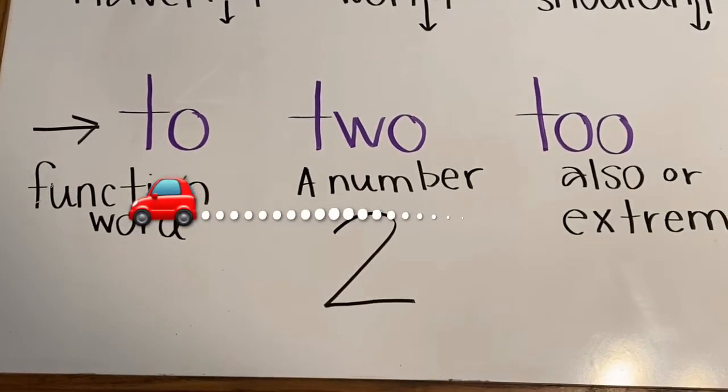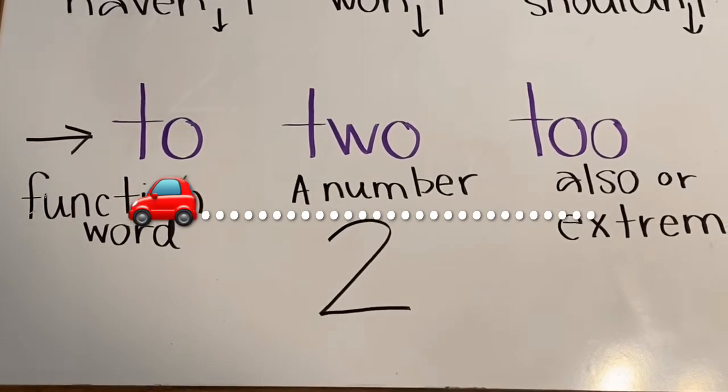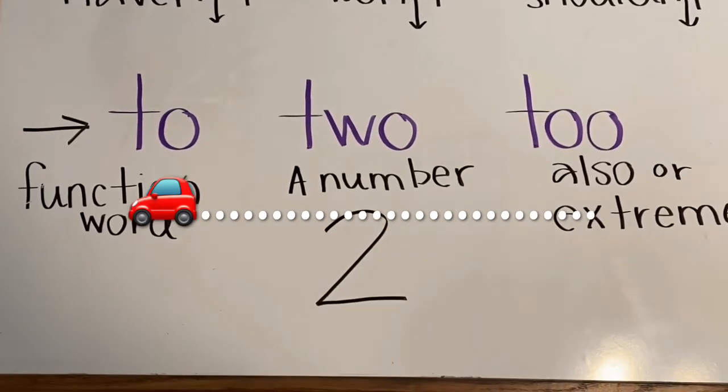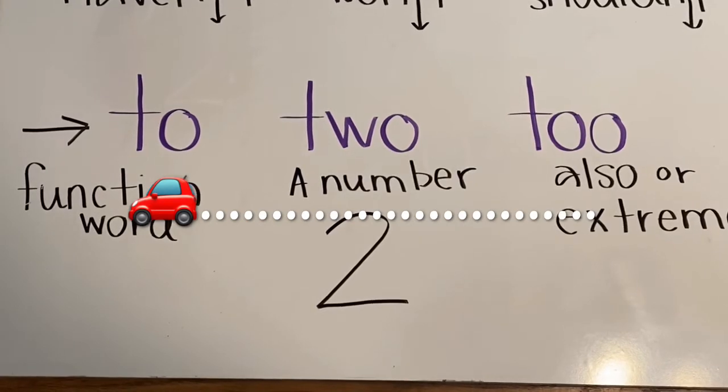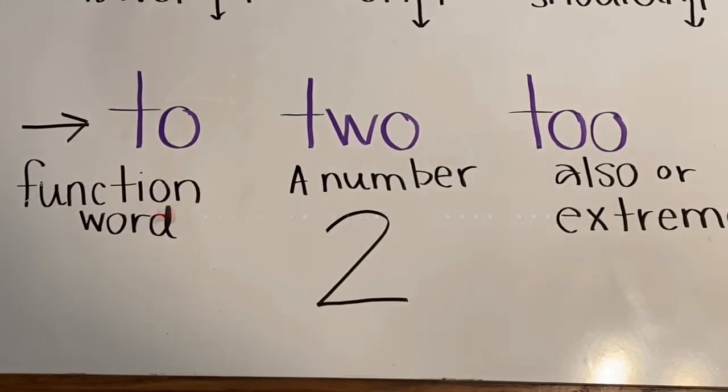The word to, spelled T-O, is what's called a function word. We would use it in a sentence like mom and dad drove to the Easter egg hunt.